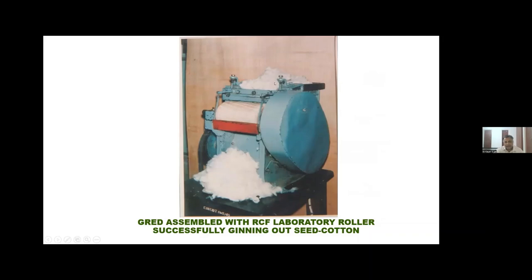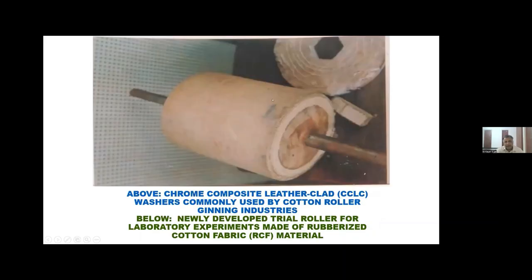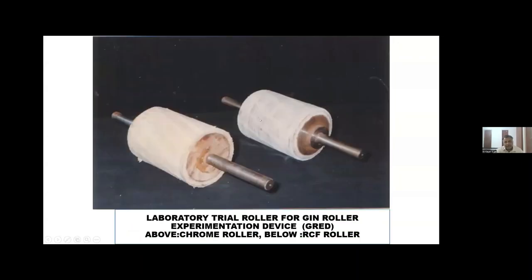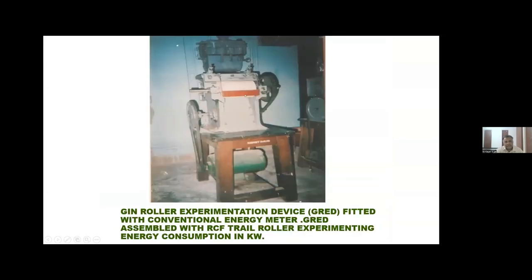A laboratory model gin is used to finally remove lint from seed cotton. Various rollers have been investigated at par with walrus, because walrus has been phased out due to sustainability and climate effects. These rollers have been measured, monitored, and controlled in cotton ginning industries. This is the chrome roller and this is the rubberized cotton fabric roller — eco-friendly technology.